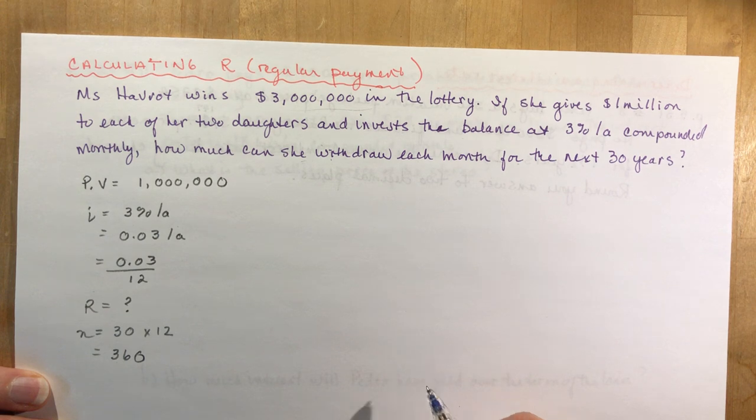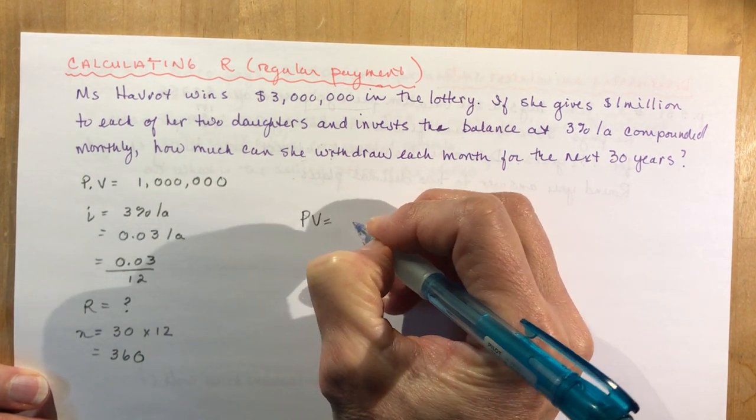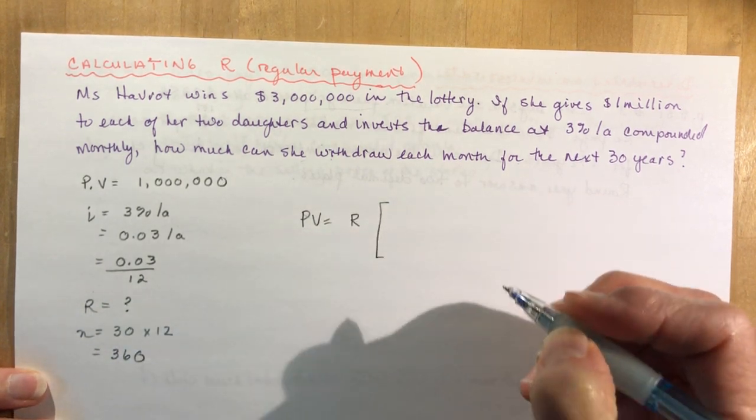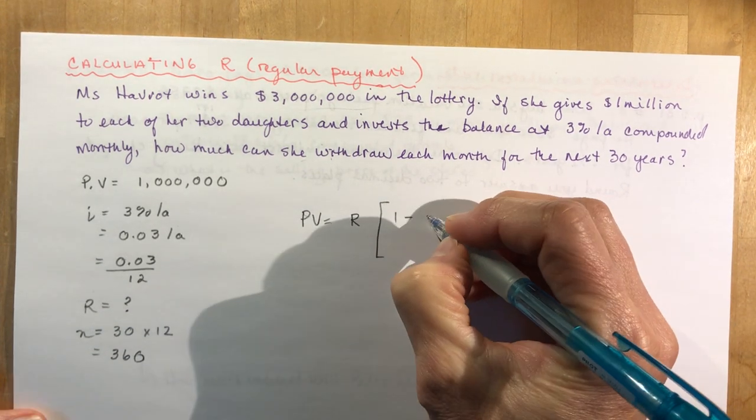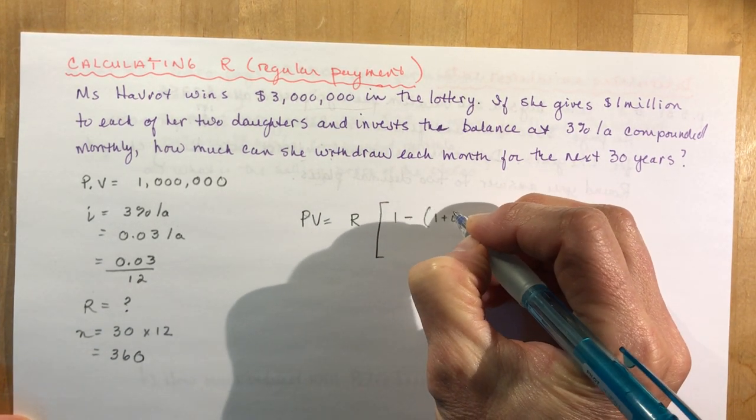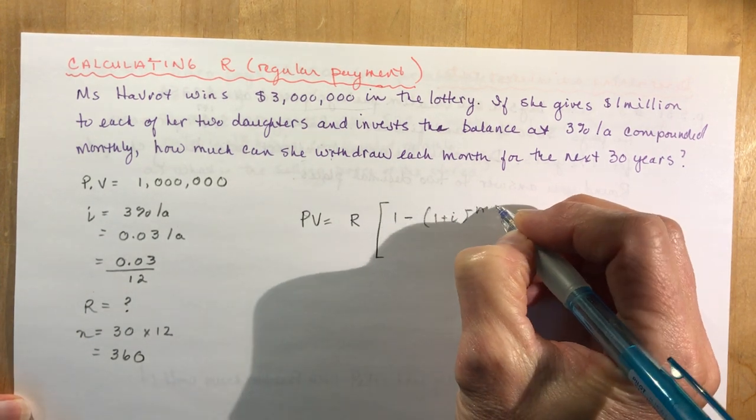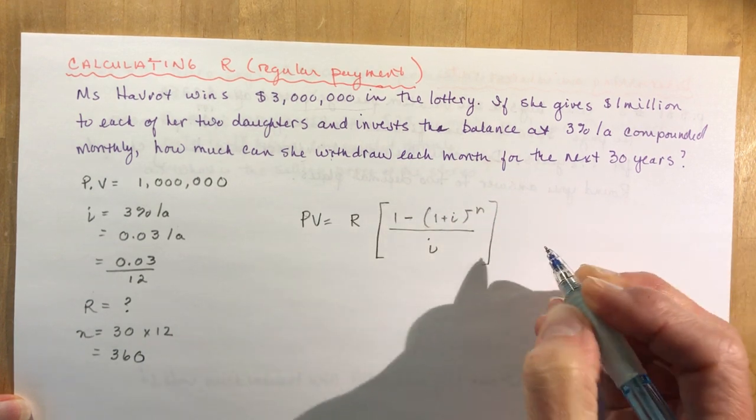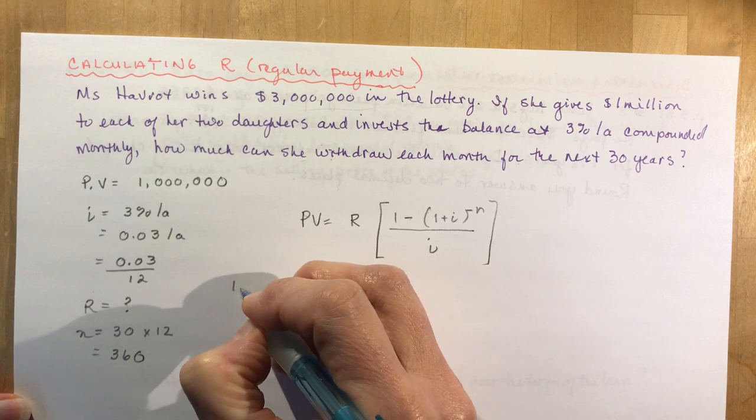All you have to do now is get out your formula. Present value equals R, big bracket, [1-(1+i)^(-n)] all over i. There's my nice formula. I've got everything I need to plug in. I plug in the million here.